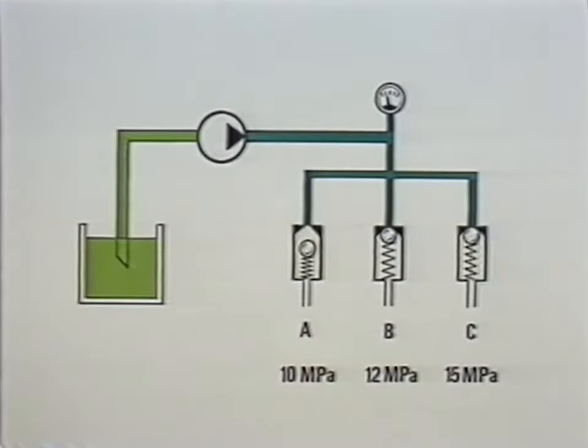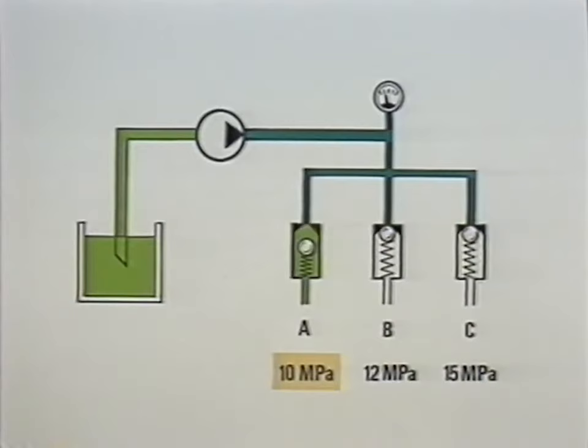When several pressure-limiting valves are connected in parallel, in other words, next to each other, the valve which has the lowest pressure setting will determine the system pressure.